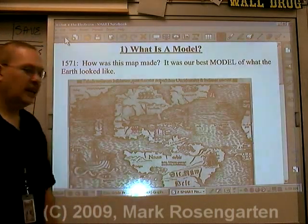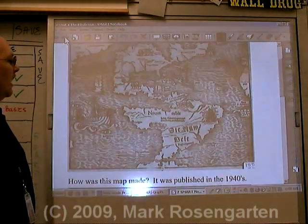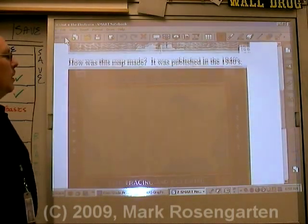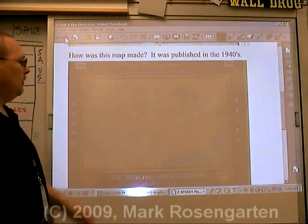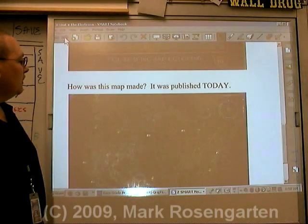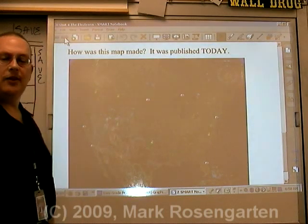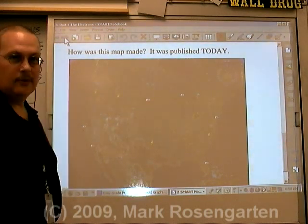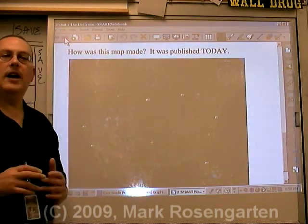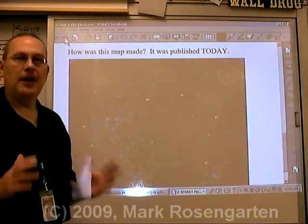This is our best guess as to what the world looked like back in 1571. But as we improved our technology, we were able to make better maps. The first map was made using ships, these were made using airplanes, and today we have the best model of the Earth available to us currently, also known as Google Earth. As technology improves, a picture of what things look like improves. In the same way, our picture of what the atom looks like has developed over the course of thousands of years.